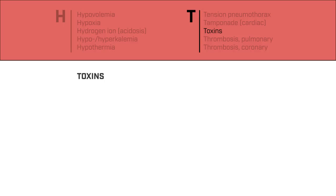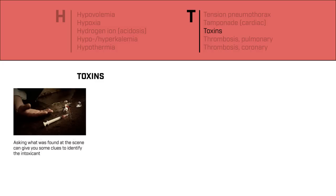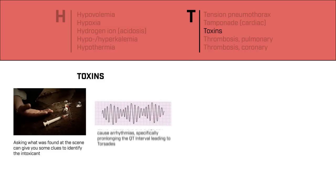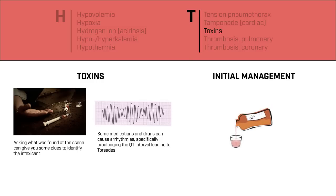Toxins, or an overdose of certain medications or illicit drugs, can lead to cardiac arrest. Information about what was found at the scene by EMS upon arrival is important because it can lead to identifying the potential intoxicant. EKGs are also important to obtain, given that some of these drugs can cause cardiac arrest by augmenting cardiac intervals. In addition to supportive care, a reversal agent or antidote may be administered if you have a strong suspicion for a particular toxin.